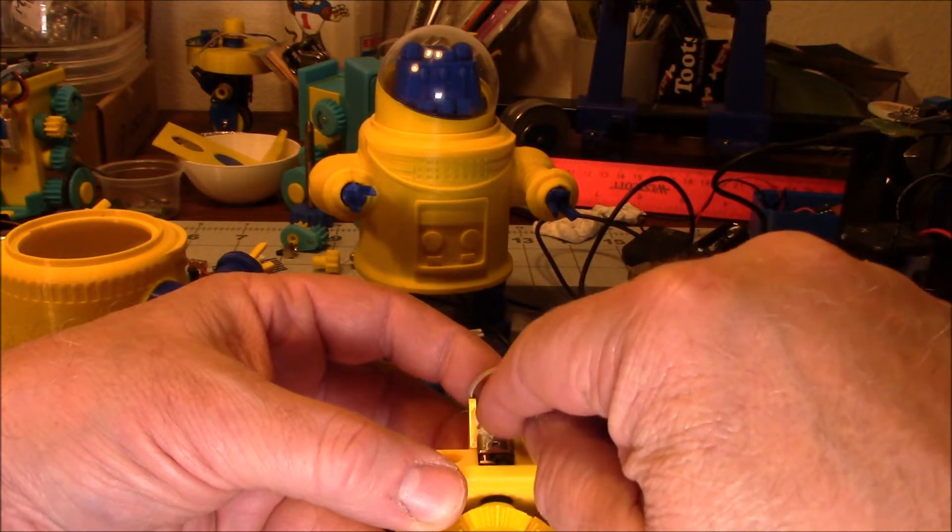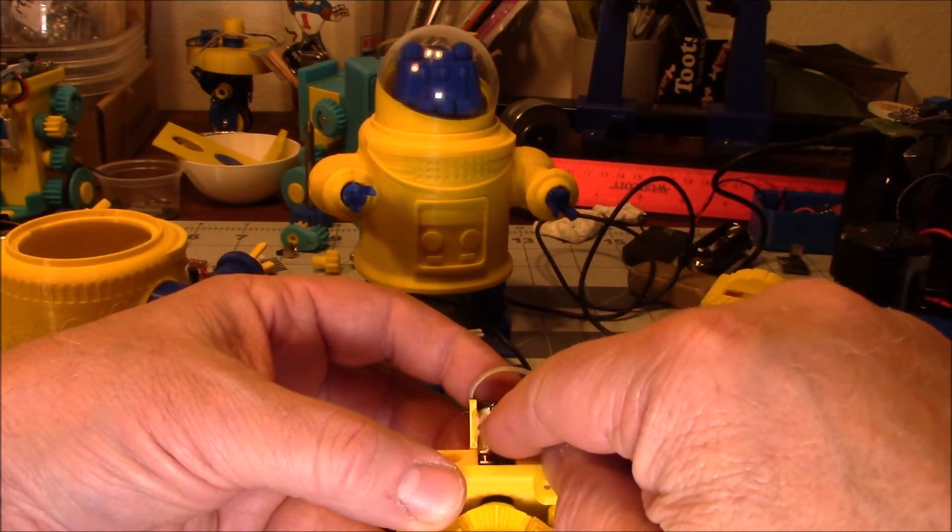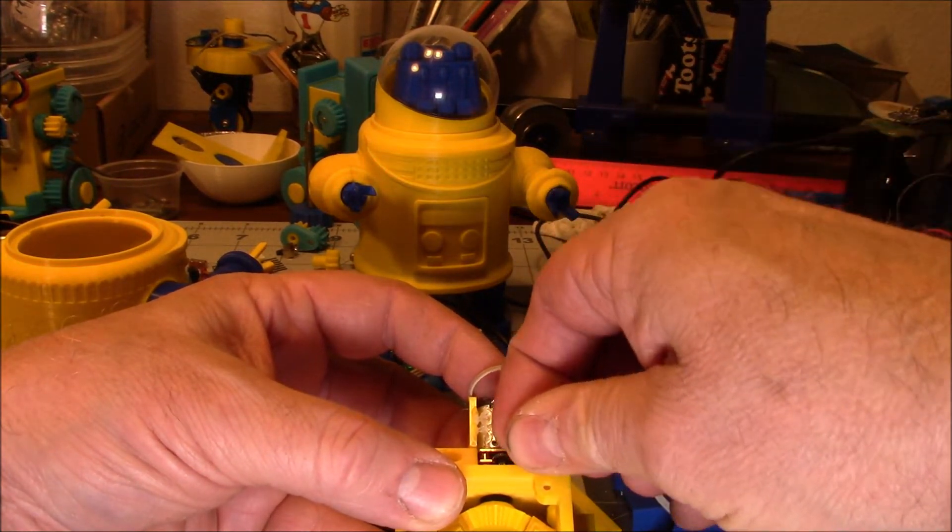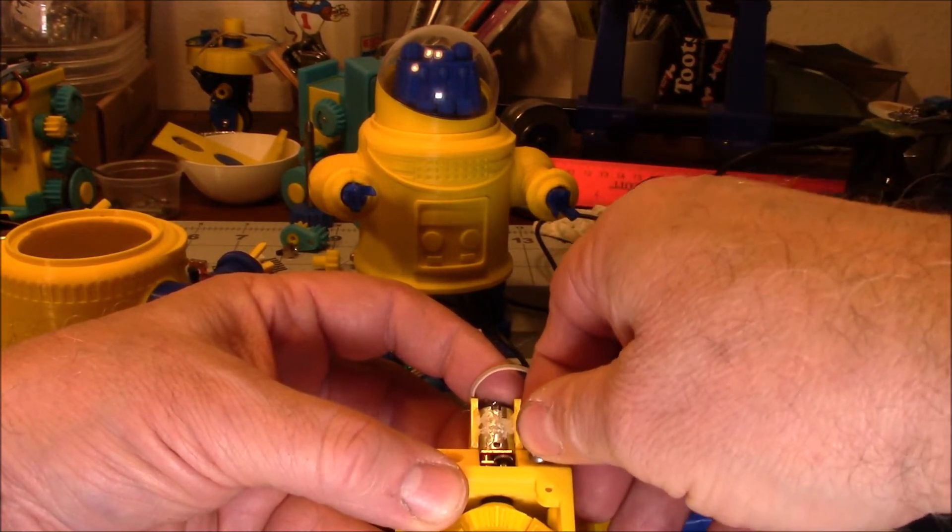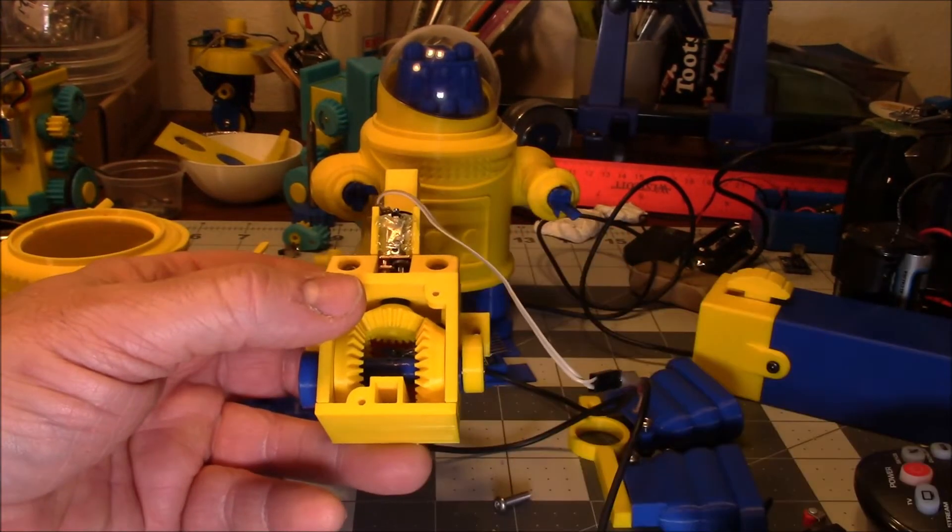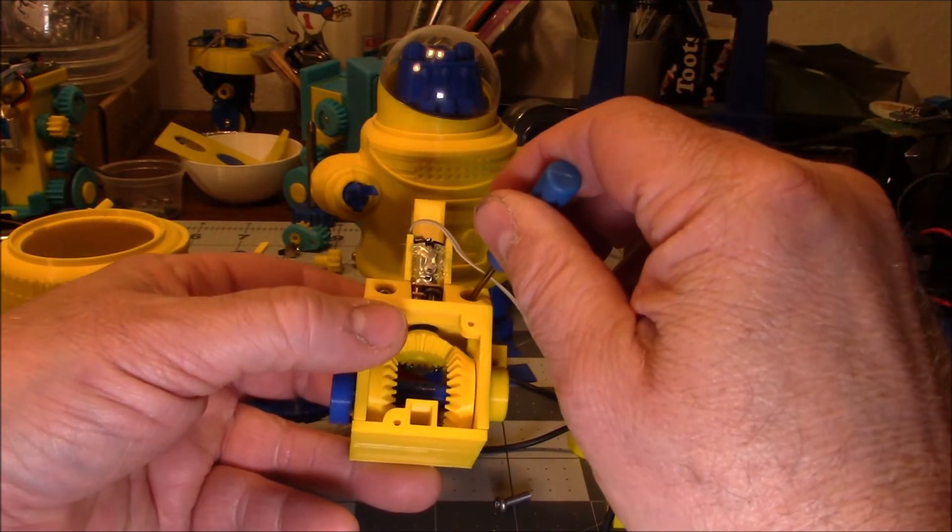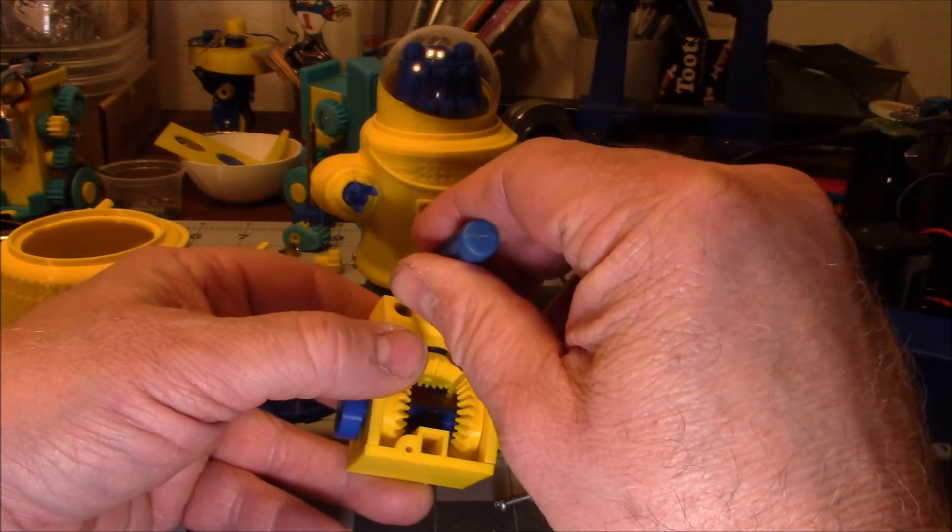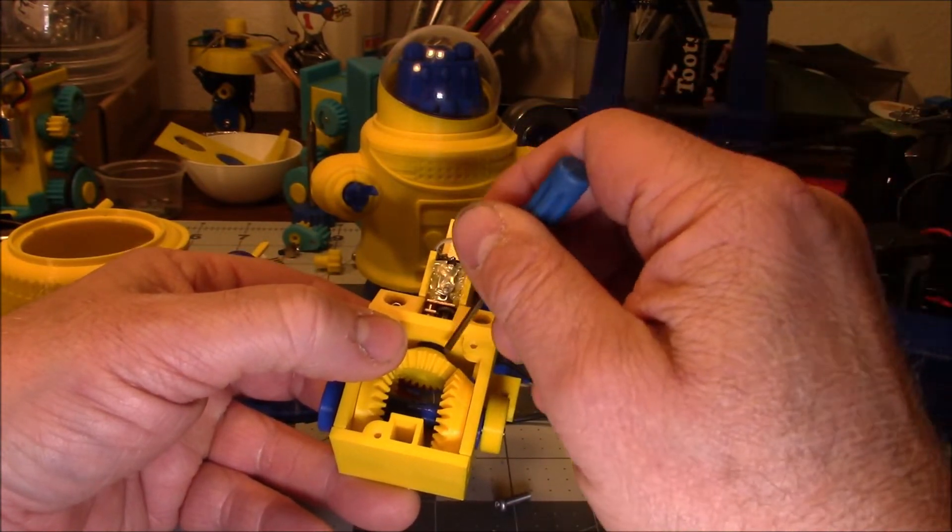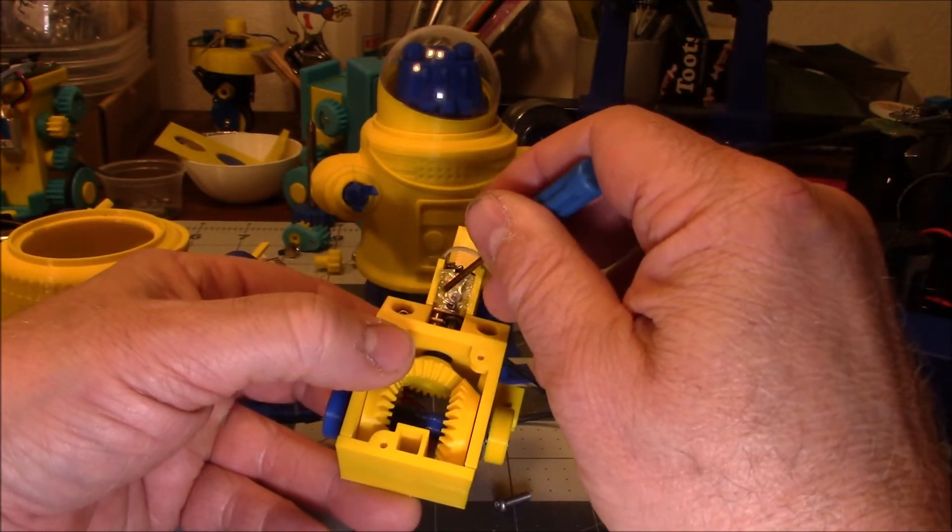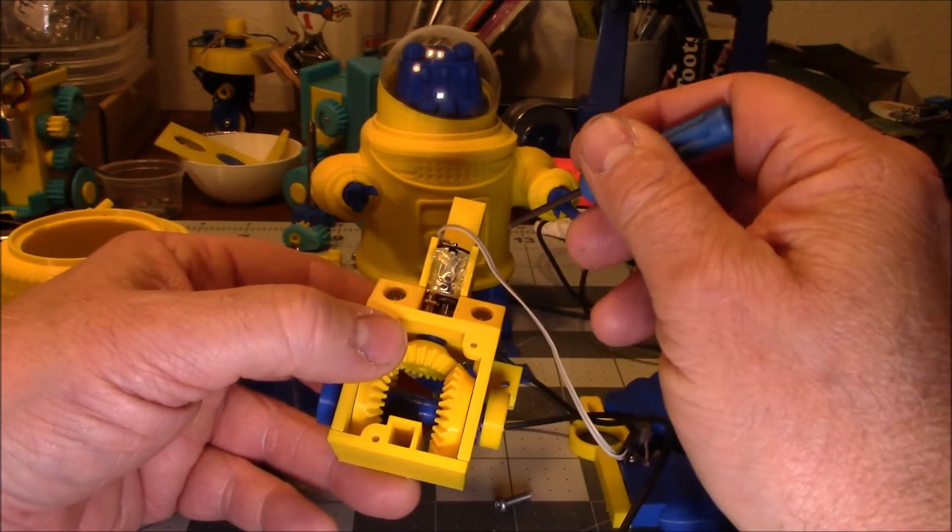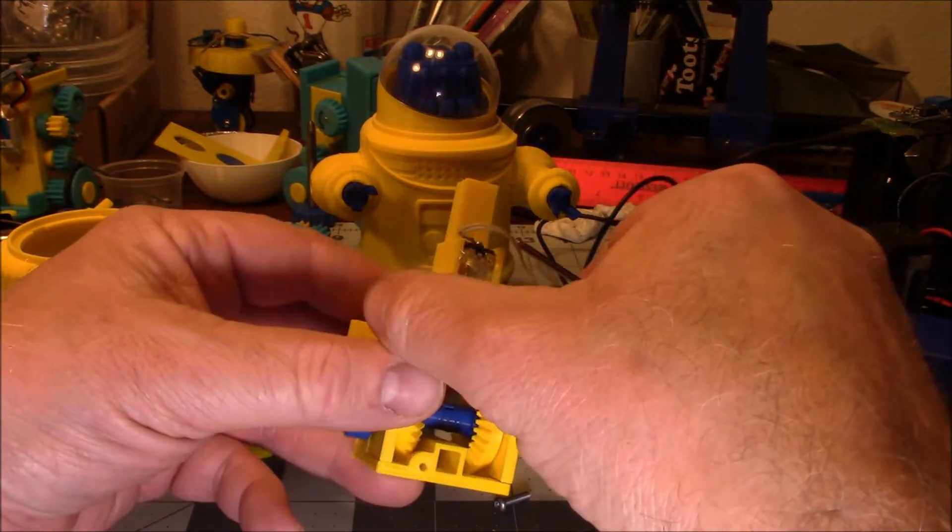So let's lock... Put our two screws in here and lock this in place before we lose it. And then we'll also put a little more hot glue back on here. I'll do that off cameras because I've got to get the hot glue gun going.